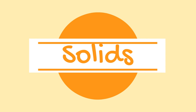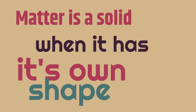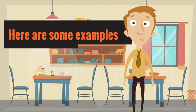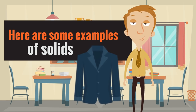We're going to start with solids. Matter is a solid when it has its own shape. Here are some examples of solids. Here is a coat. A coat is an example of a solid — it has its own shape. It's the shape of a coat, but it has its own shape. It's a solid.